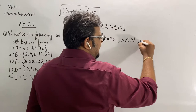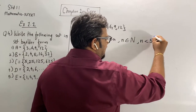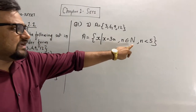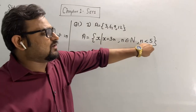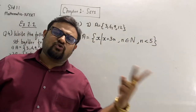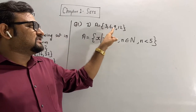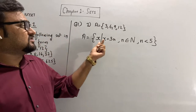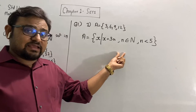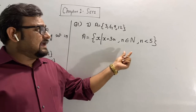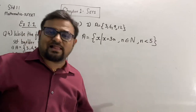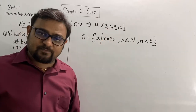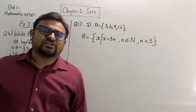One more thing: n is less than 5. So you can take all values of n such that n is a natural number and n must be less than 5 — that is 1, 2, 3, 4 — giving 3, 6, 9, 12. You can also write: x such that x is a multiple of 3, and x is less than or equal to 12, meaning x is greater than or equal to 3.